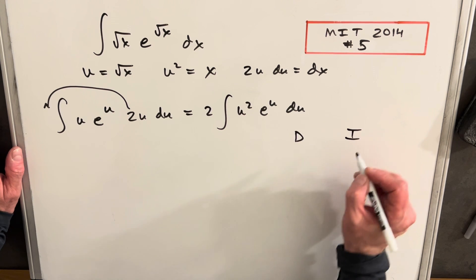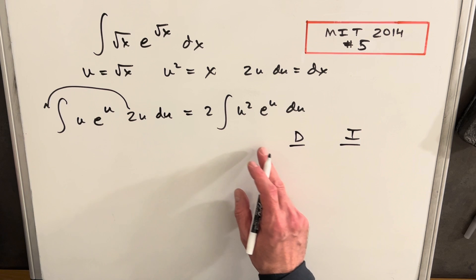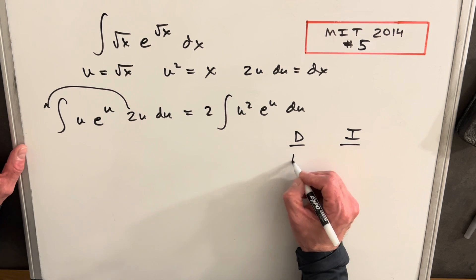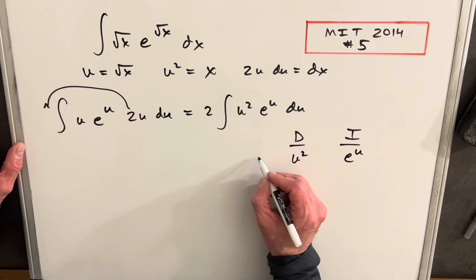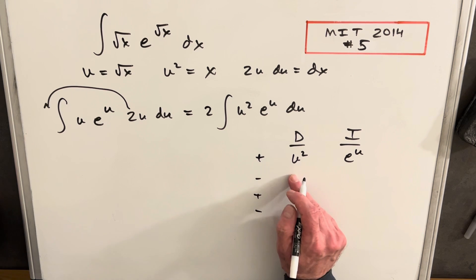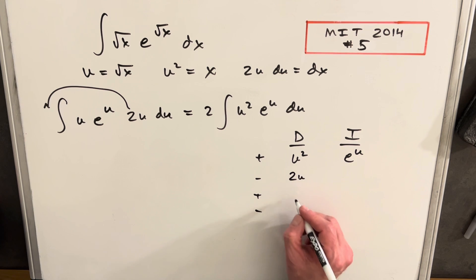We'll have 2 columns, a D and an I to differentiate and integrate. I'm going to want to differentiate the u squared. That's going to reduce the power when we differentiate. So we're going to call this our u squared. And we're going to call this e to the u. Then we'll do alternating signs. We'll differentiate this column. So we're going to have the derivative of u squared is 2u. The derivative of 2u is 2. Then the derivative of this is going to be 0.